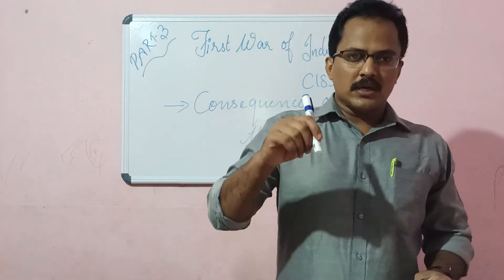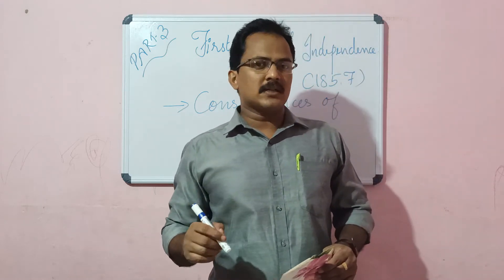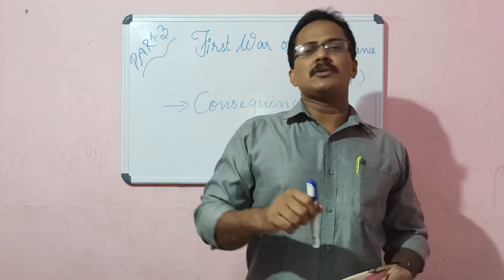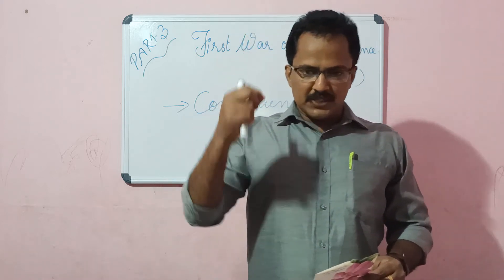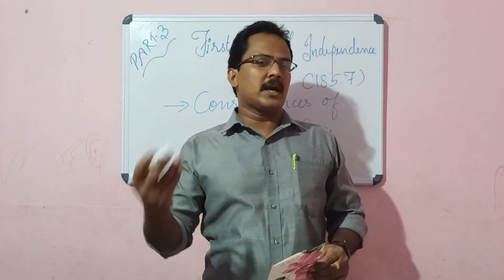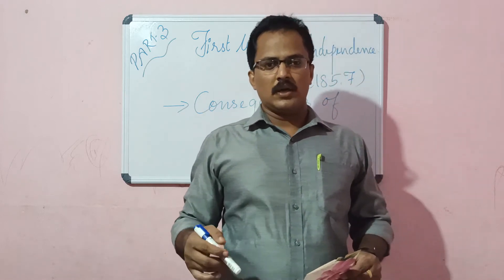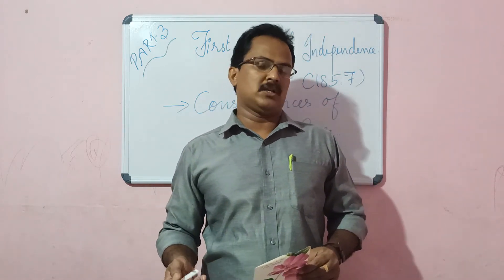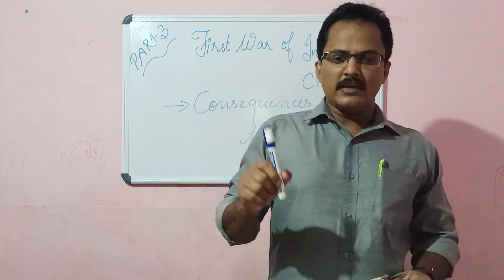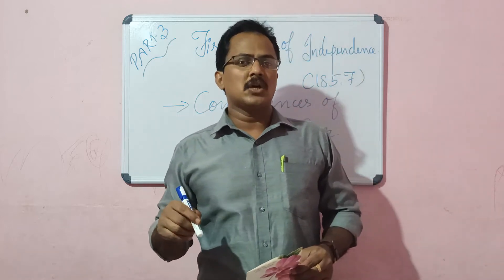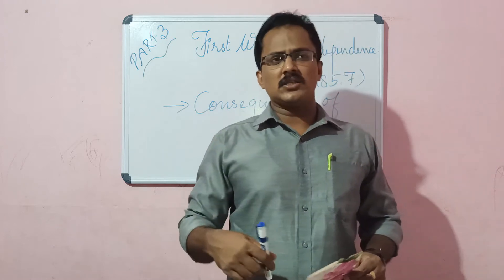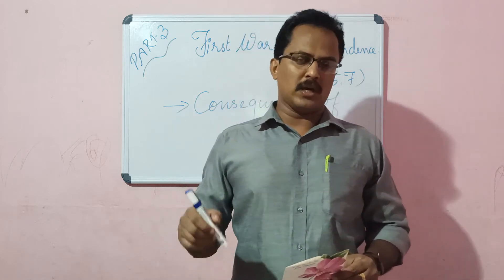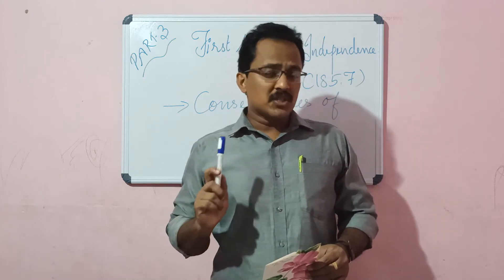The revolt of 1857 started as a revolution among the sepoys — an Indian soldier in the British army. Gradually this revolt spread into other sections of society. These revolutionaries were not able to expel the British from India, but this incident caused so many changes, given under the heading consequences of the first war of Indian independence. In the textbook there are 13 points given.